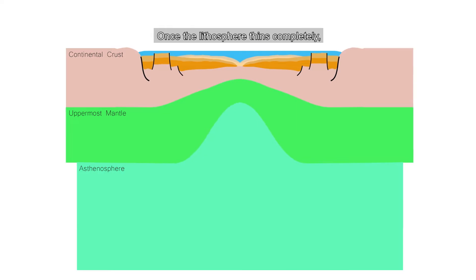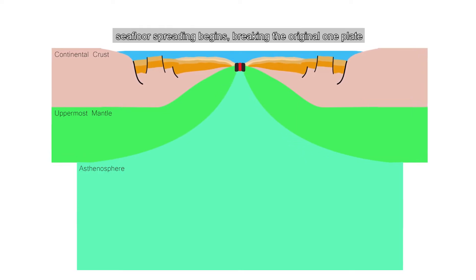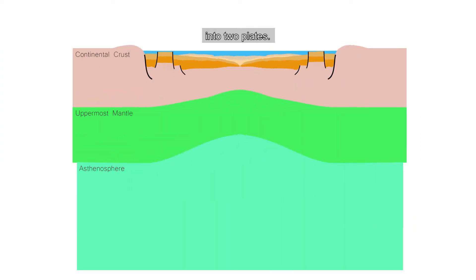Once the lithosphere thins completely, allowing the asthenosphere to reach the surface, seafloor spreading begins, breaking the original one plate into two plates.